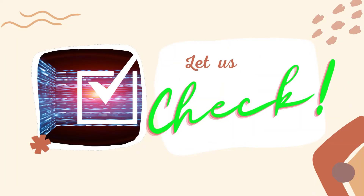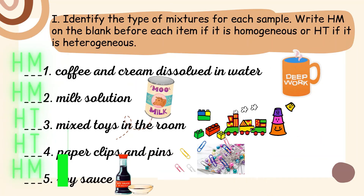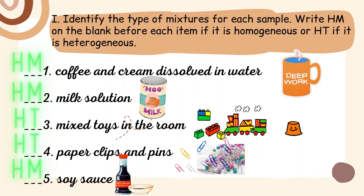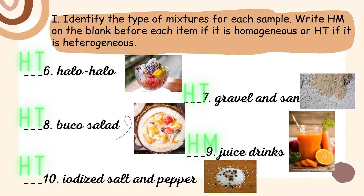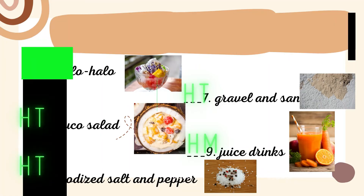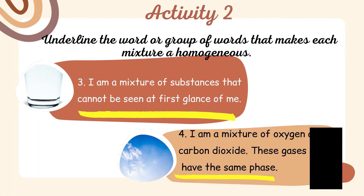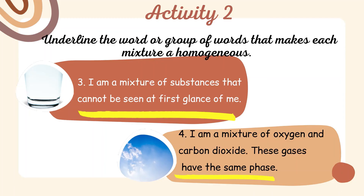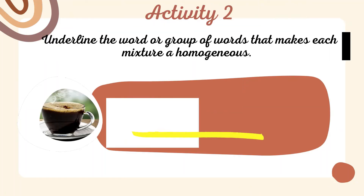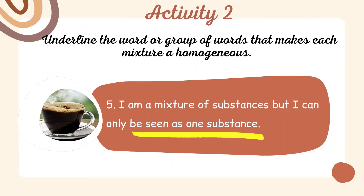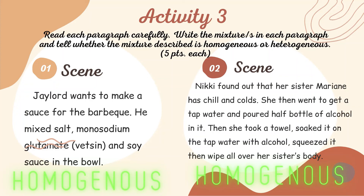Now let us check. Activity one answers: one and two — HM; three and four — HT; number five — HM; number six — HT; seven and eight — HT; number nine — HM; and number ten — HT. Activity two answers: no longer identifiable; it was dissolved in the water; cannot be seen at first glance of me; have the same face and be seen as one substance. Activity three: both are homogeneous. Good job!